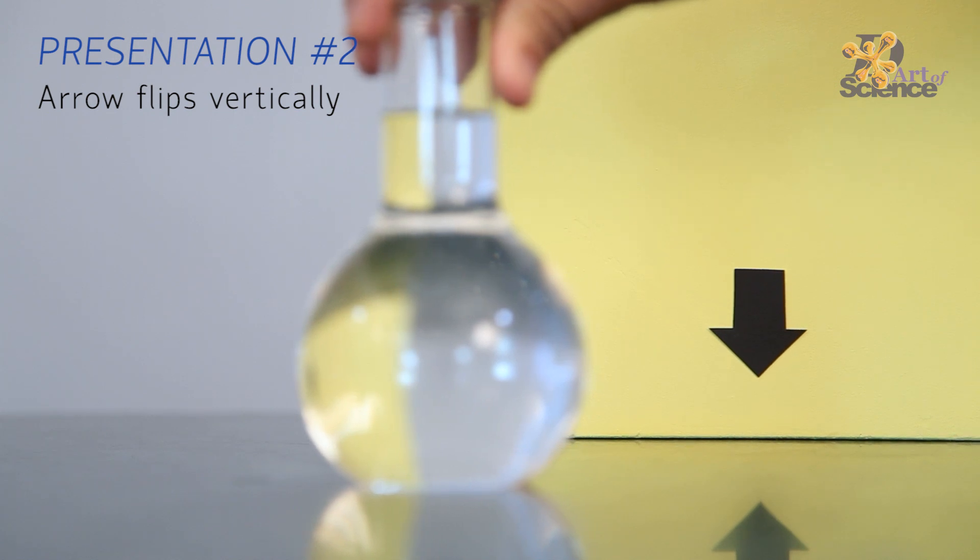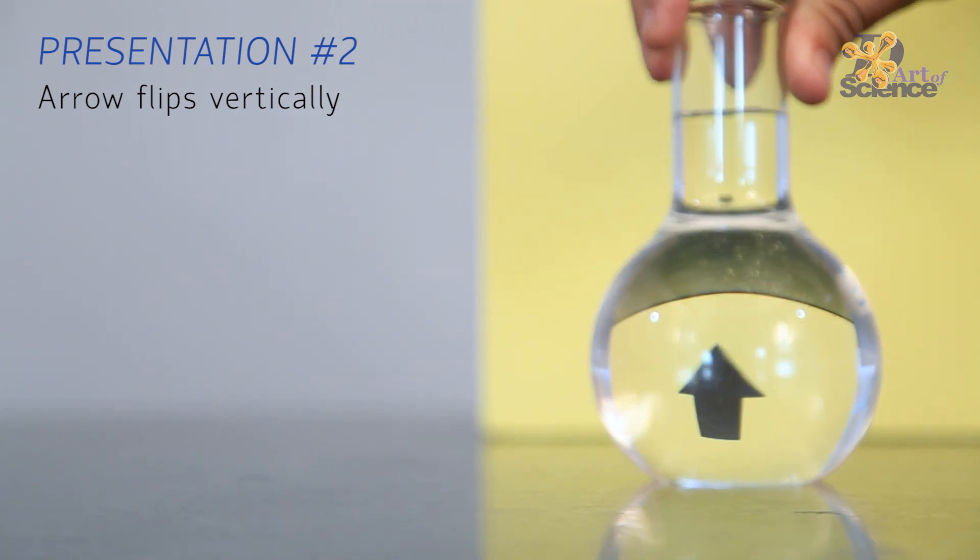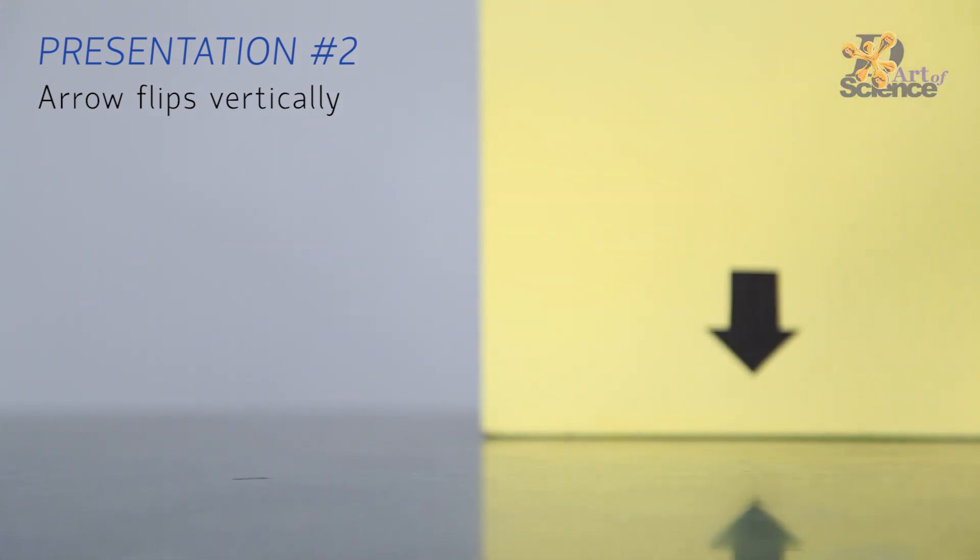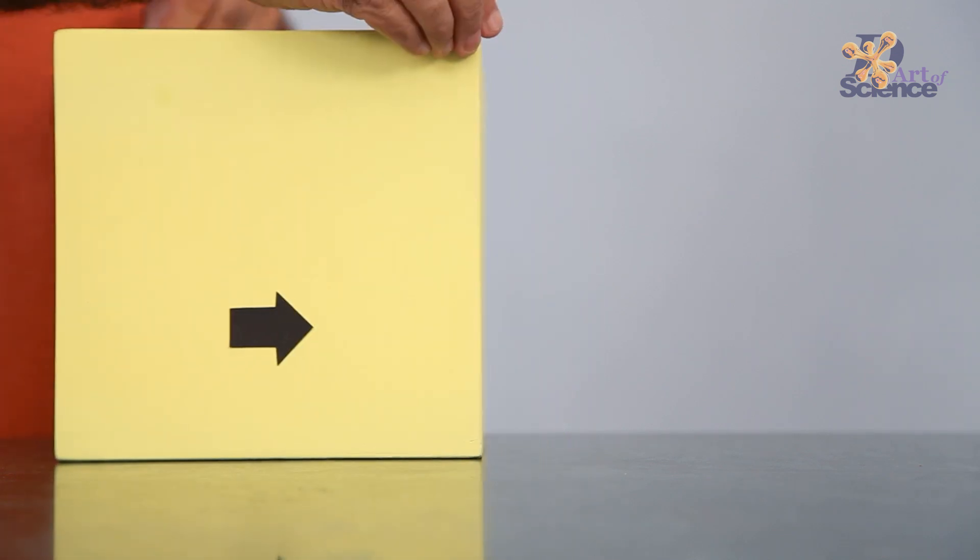Firstly, the light from the arrow bends multiple times as it passes through multiple mediums like air, glass and water. It bends twice when it enters the water and then twice again when it leaves the water.